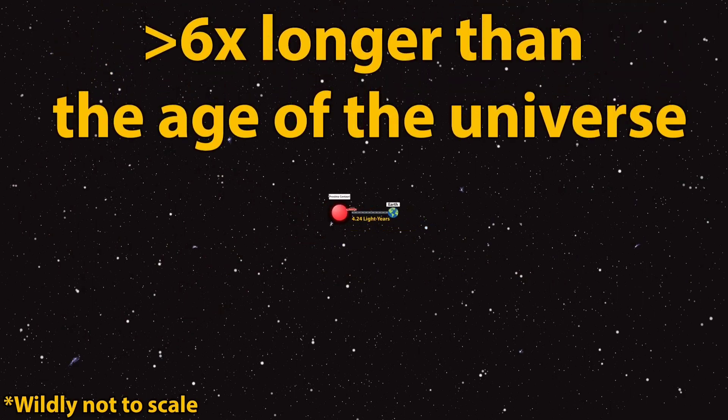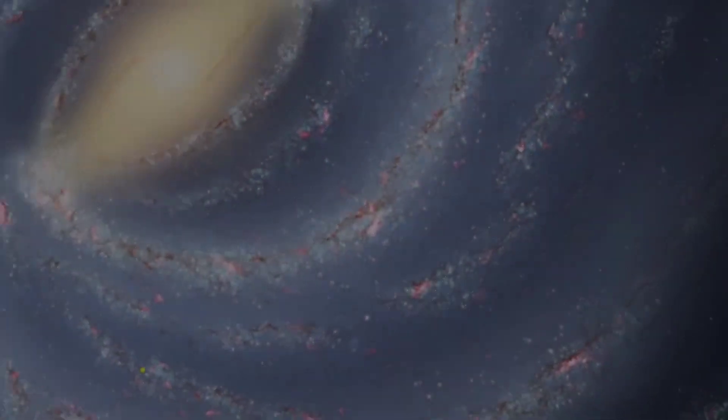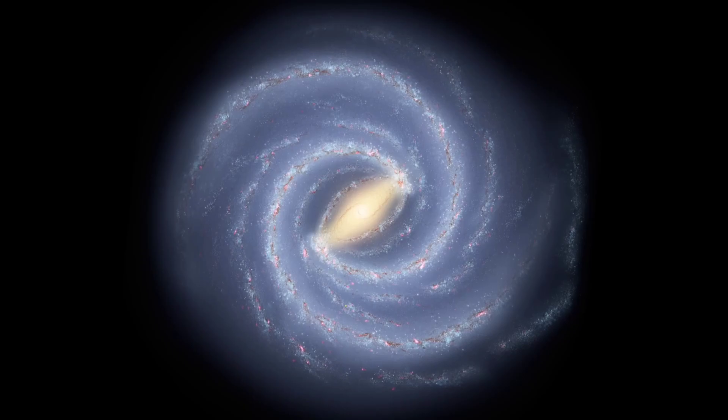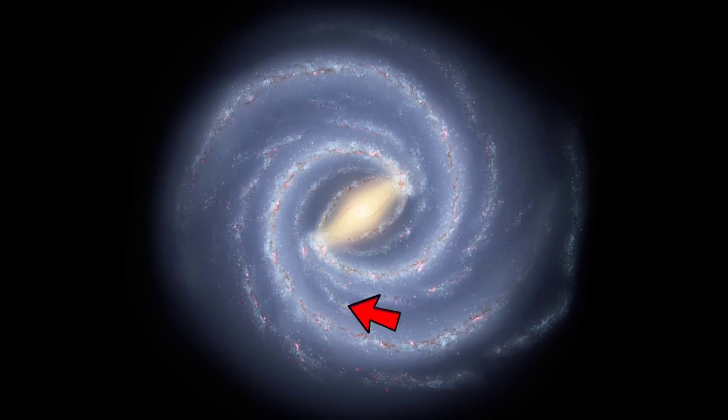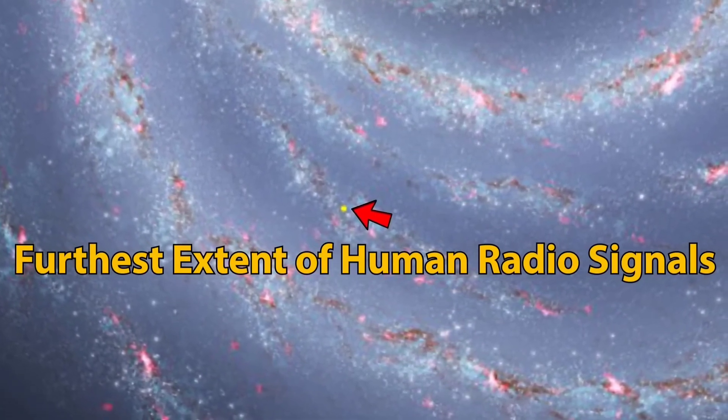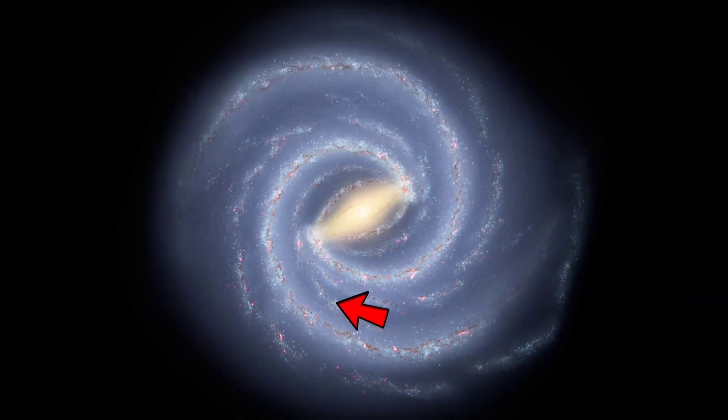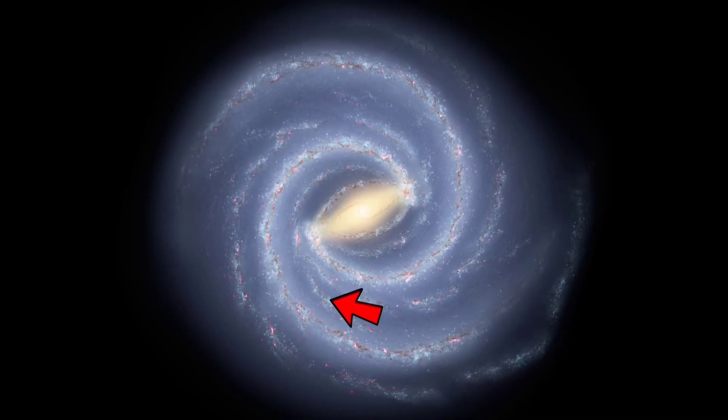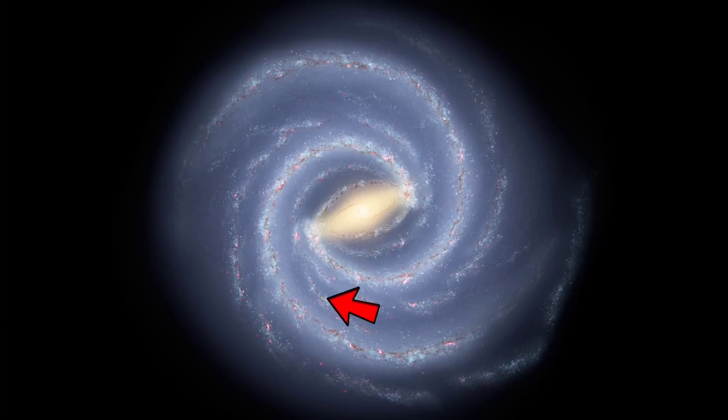When we zoom out even further we can see the entire Milky Way galaxy, inside of which Earth is located right here. This yellow dot is the furthest extent of humanity's radio broadcasts throughout history, which means that any possible aliens who live outside of this range are totally unaware of humanity's presence. It's complete silence outside of this yellow dot as far as we are currently aware.